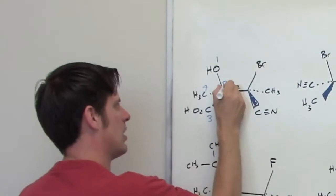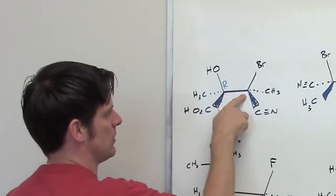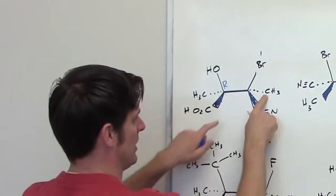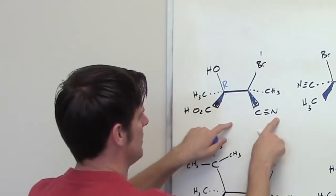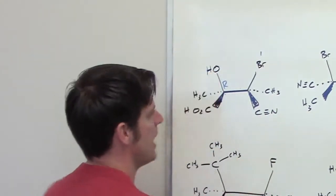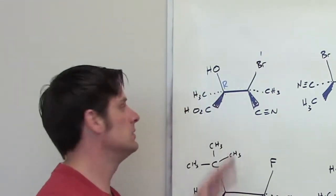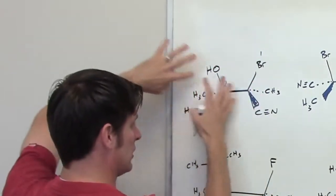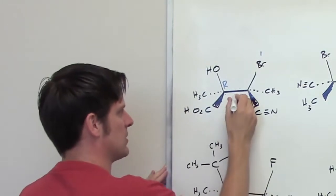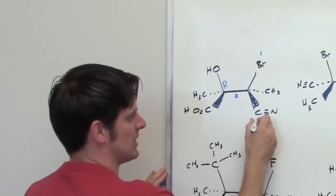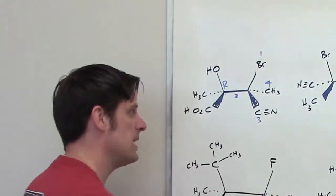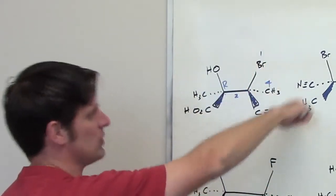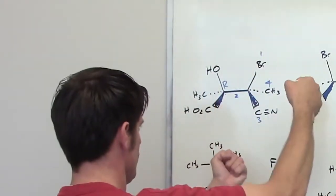Now we do the same thing for the next stereocenter. It's bound to a bromine, a carbon, a carbon, and a carbon. Bromine wins. Breaking the tie: one carbon is bound to a hydrogen, one to a nitrogen, and one to an oxygen. The branch bound to oxygen is the winner — group number two with respect to this stereocenter. The carbon bound to nitrogen is group number three, and the methyl is group number four. Group number four is pointing three-dimensionally away from us. Going from one to two to three is counterclockwise, which is S.